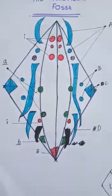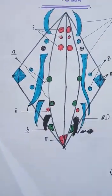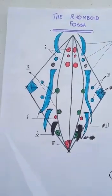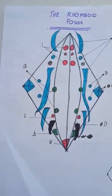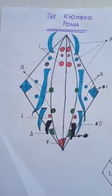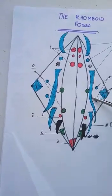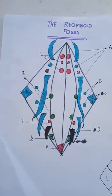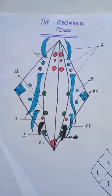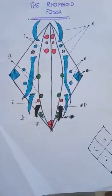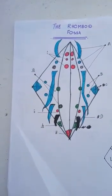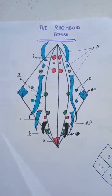The solitary nucleus — nucleus solitarius — is present in the medulla oblongata. The first letter of solitarius is S, so seven. The solitarius nucleus contains the seventh cranial nerve.